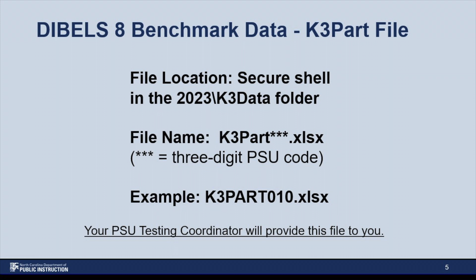The second file is called the K3 part file. This file can also be retrieved by your testing coordinator from the Secure Shell in the 2023 K3 data folder. This file contains a summary of data on assessment participation rates, as well as summary data on test records that may have issues. The file name will be as displayed on the slide, with the three asterisks representing the PSU code. In this example, the file name is K3_part_010.